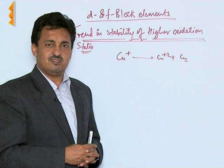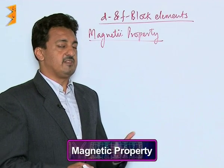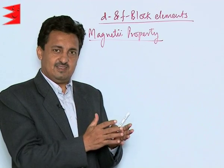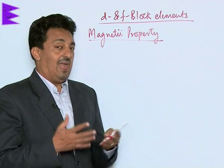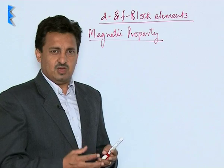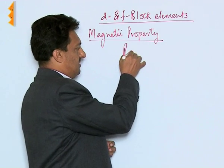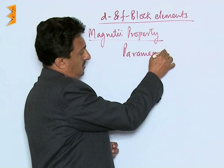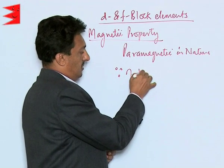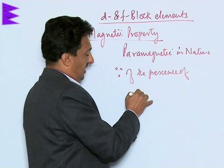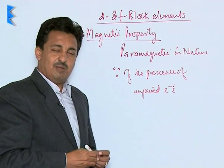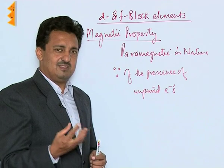Now let us discuss the magnetic properties of the d-block elements. Since the energy difference between (n−1)d and ns subshells is very small, the (n−1)d electrons are also available. As a result, all transition elements in the d-block are paramagnetic in nature due to the presence of unpaired electrons. Paramagnetic substances are those which get feebly attracted in an external magnetic field.